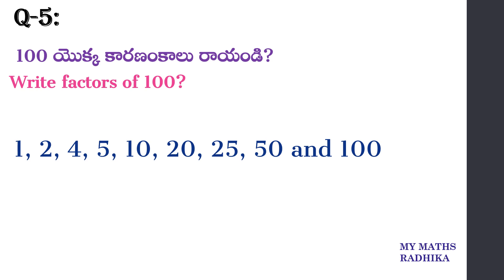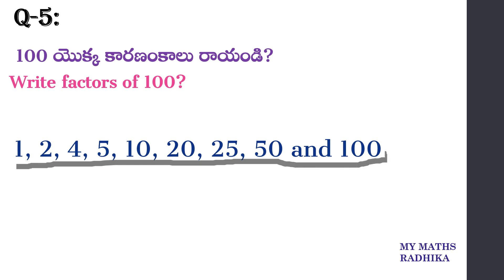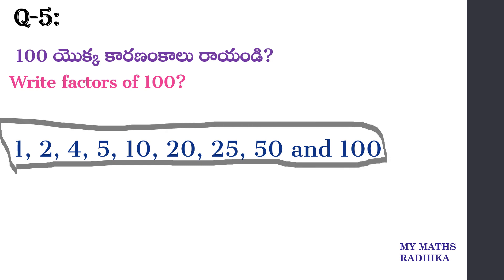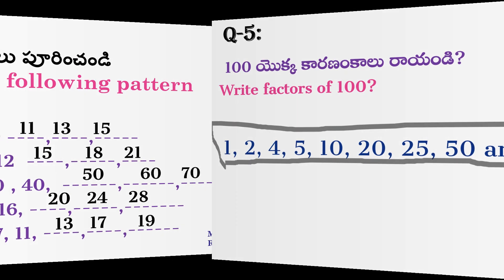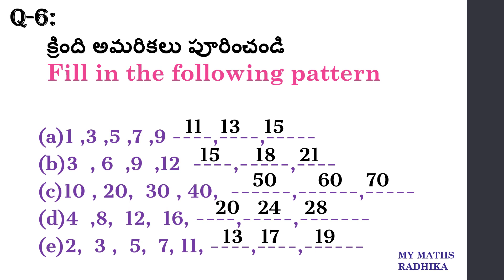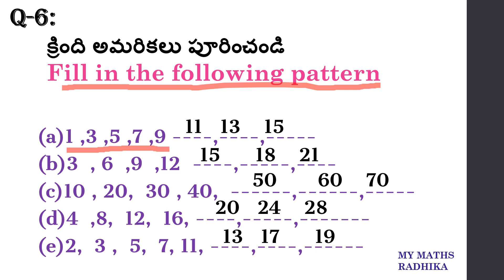What are the factors of 100? Factors of 100: 1, 2, 4, 5, 10, 25, 100. Why are the factors of 100? 1, 3, 5, 7, 9.